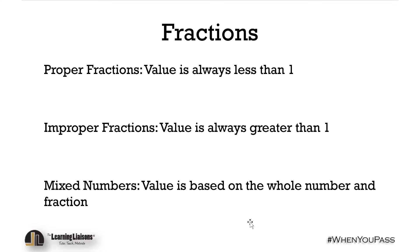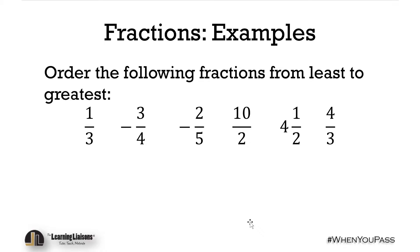Proper fractions: their value is always less than one. Improper fractions: their value is always greater than one. And mixed numbers: their value is based on the whole number and the fraction. So let's go ahead and tackle some examples — let's order the following fractions from least to greatest: one-third, negative three-quarters, negative two-fifths, 10 over two, four and one-half, and four over three.